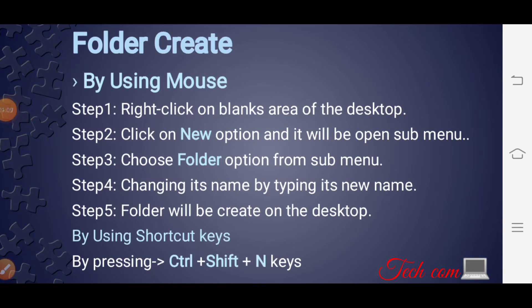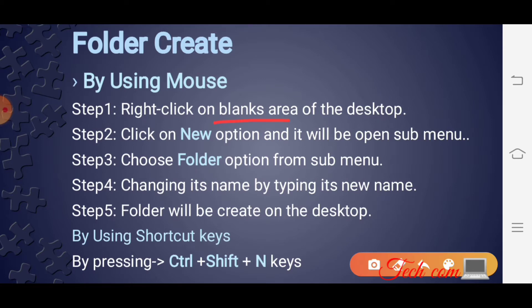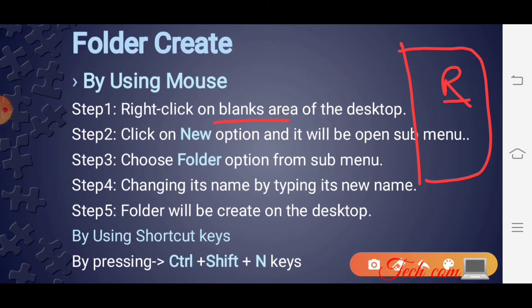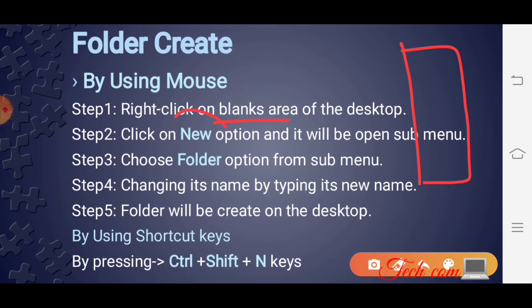To create a folder using mouse: first step is right click on blank area of the desktop. जो desktop का blank area होगा वहाँ पर right click करना है। Click on the New option — it will open some menu. जब आप desktop पे right click करोगे तब एक list open होके आएगी, वहाँ से New option पे click करना है। New option पे click करने के बाद folder option पे click करना है।